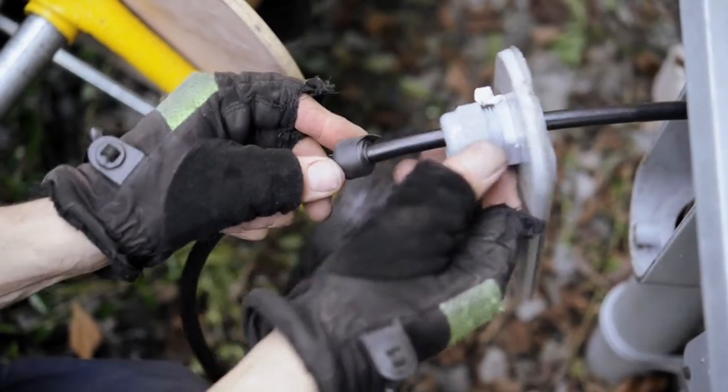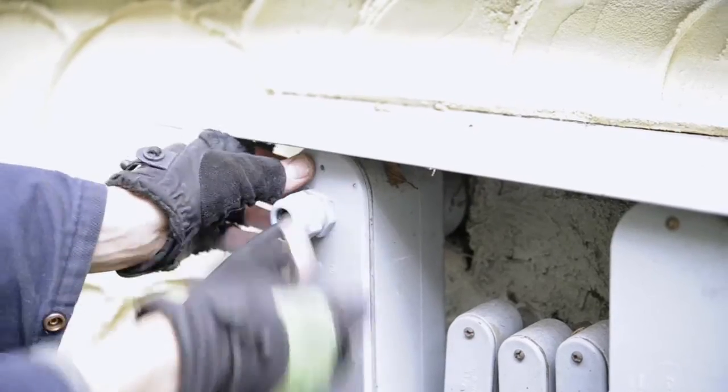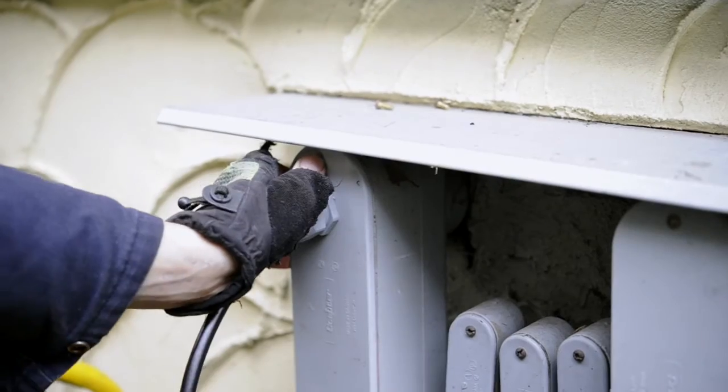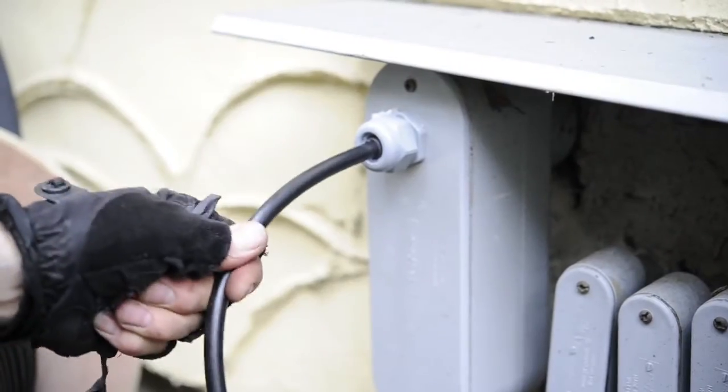One important note about running a cable inside the building is make sure that the cable just before it enters the building drops below the level of the point of entry. This makes it impossible for water to run down the cable and get inside the building.